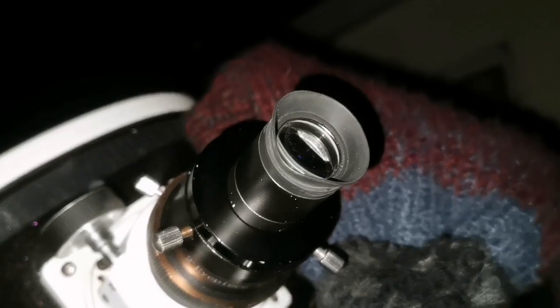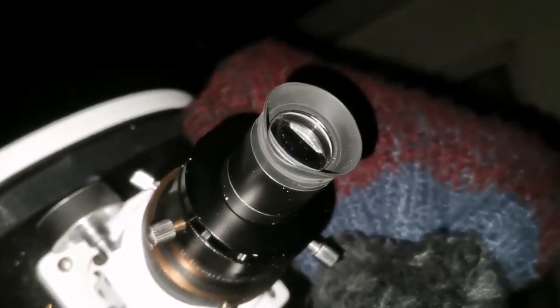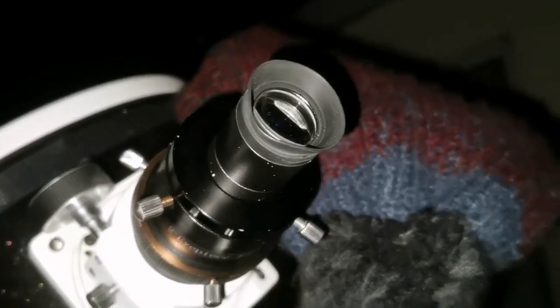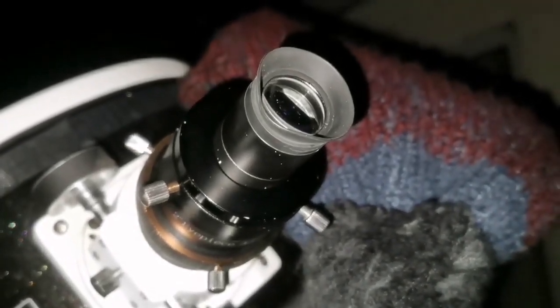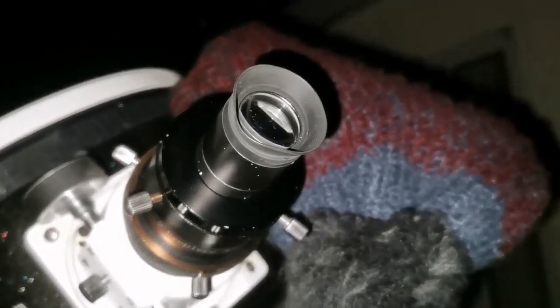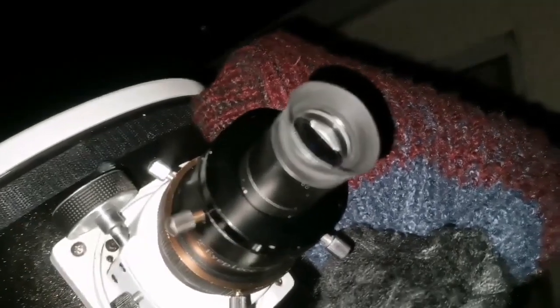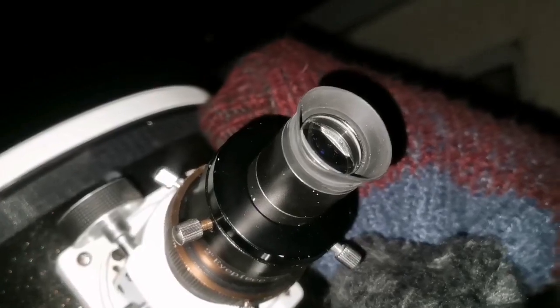In this category, Tele Vue Panoptic 24 millimeter 68 degrees was one of the worst because it was not any better than the 32 millimeter Celestron Ultima series Plossl. And yeah, surprise. I'm going now to try Celestron Omni 40 millimeter just to see how it is for a joke.